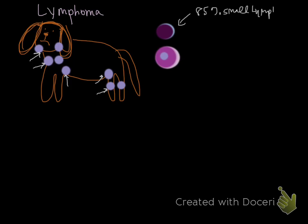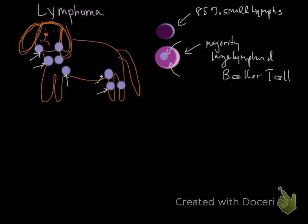If you do cytology of these lymph nodes, normally a lymph node should be filled with greater than 85 percent small lymphocytes. In lymphoma, most types will have a majority of large blasts or large lymphoid cells; the chromatin will be less mature with a stippled appearance, and you'll see a prominent nucleolus most often. This can be B cell or T cell, and the idea that one is worse than the other is no longer as clear-cut — it's much more complex.